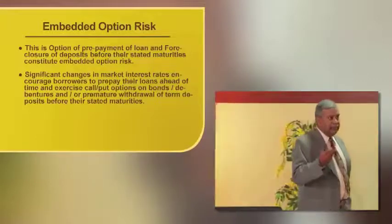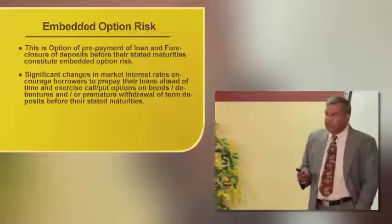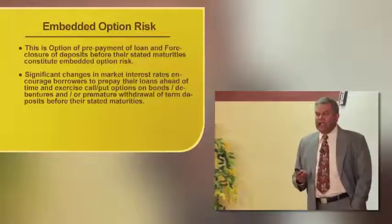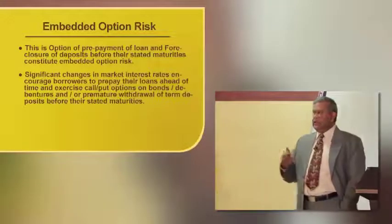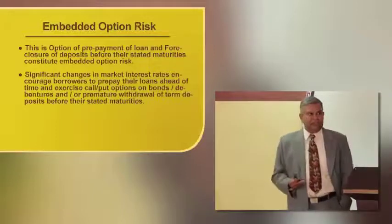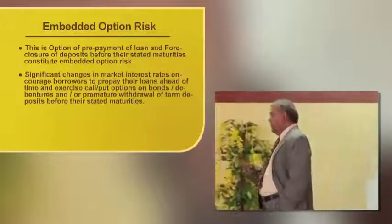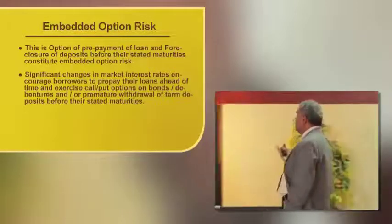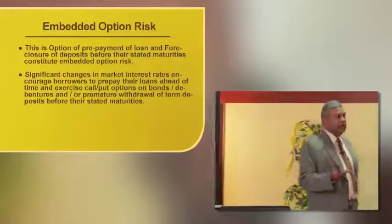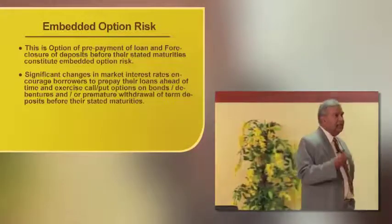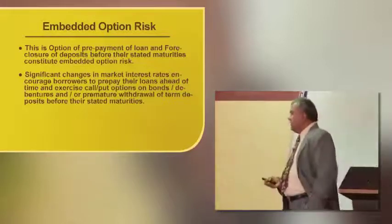Banks are allowed to issue IPDI bonds, perpetual bonds, or subordinated bonds under the Basel II scenario. In the case of perpetual bonds, there is a call option built in at the 10th year — a subscriber can say they want their money back. This is called a call option. However, when migrating to Basel III, all these instruments will be phased out.